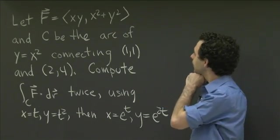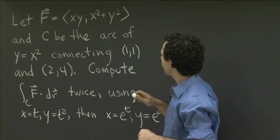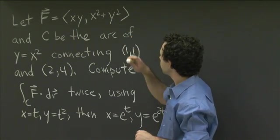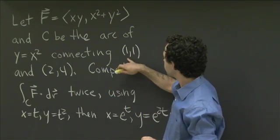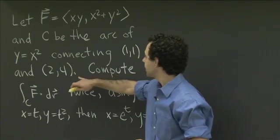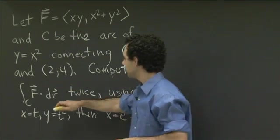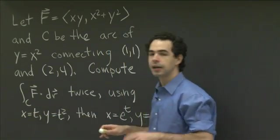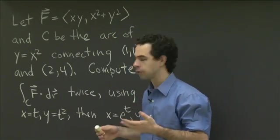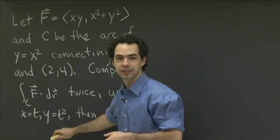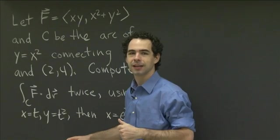So in both problems, F is going to be the vector field whose coordinates are x, y, and x squared plus y squared. And C is going to be the arc of the parabola y equals x squared that starts at the point (1,1) and ends at the point (2,4). So what I'd like you to do is compute the integral over this curve C of F dot dr in two different ways. The first time, I'd like you to use the natural parameterization x equals t, y equals t squared. That's the first parameterization that I think of when I think about this curve.